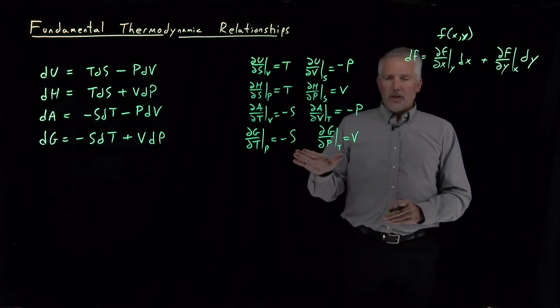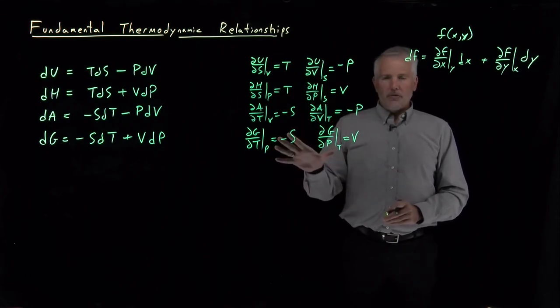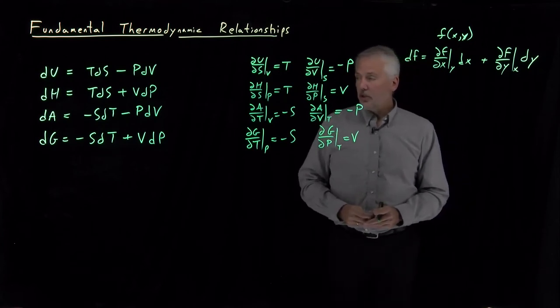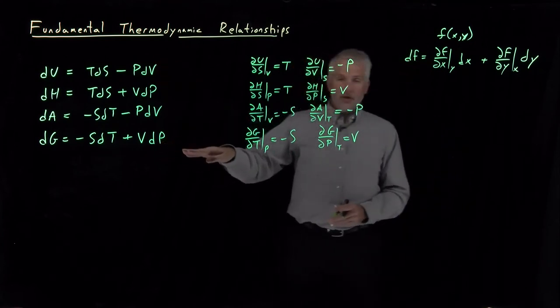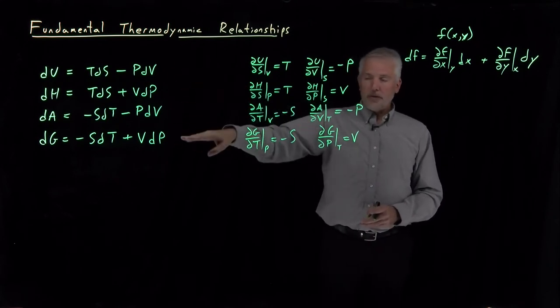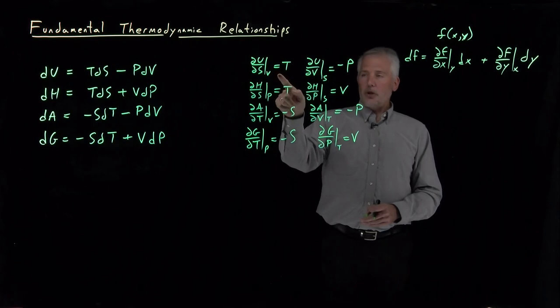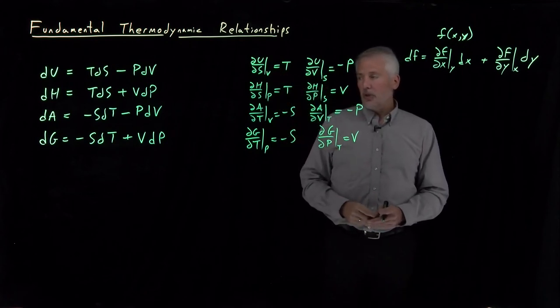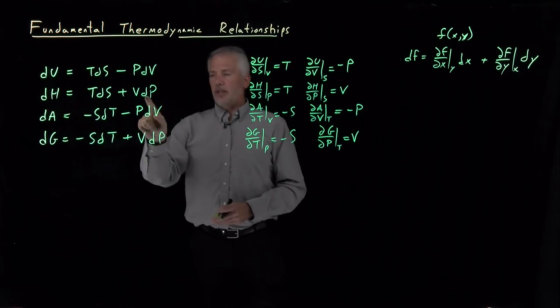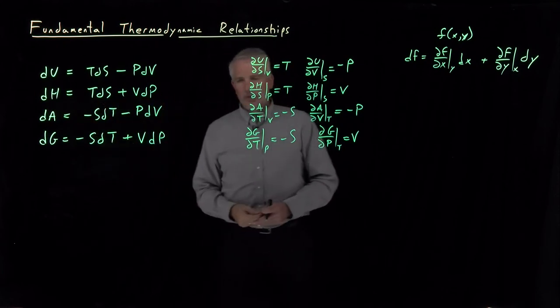The thing to remember here is not that here's eight more relationships to add to a list and to memorize. The easiest thing to do is, if you know what the fundamental equations are, which we've had occasion to use multiple times, you can determine these derivatives immediately. If we ever need dH/dS at constant p, we recognize from the fundamental equation exactly what that derivative is equal to.